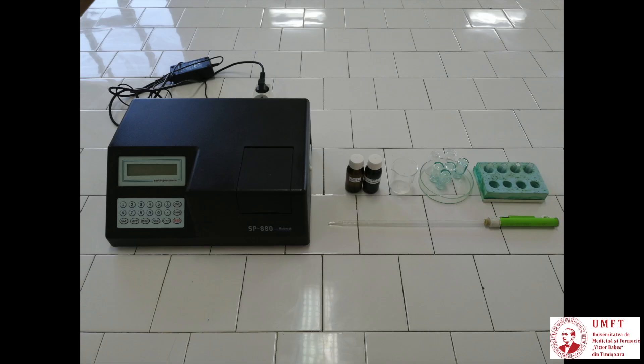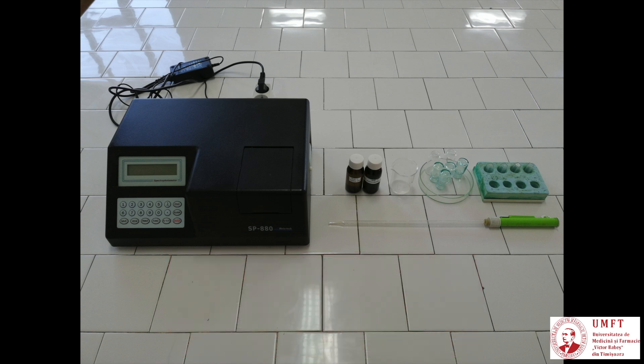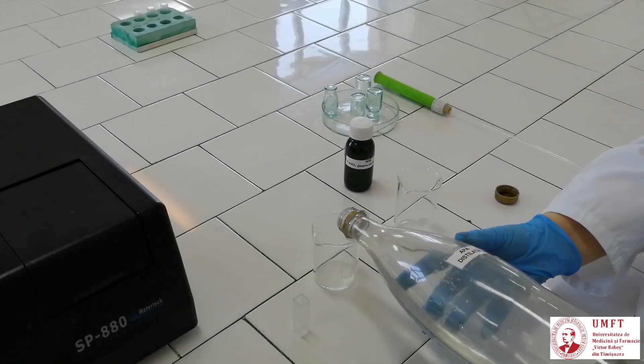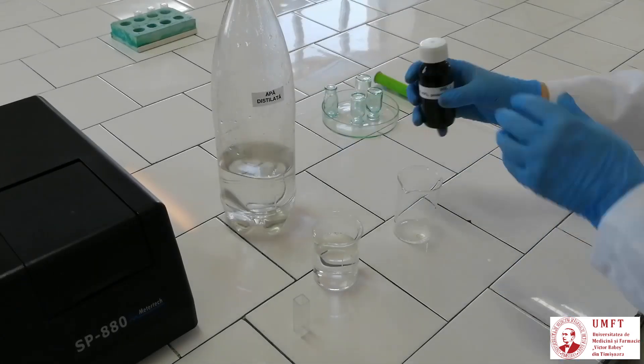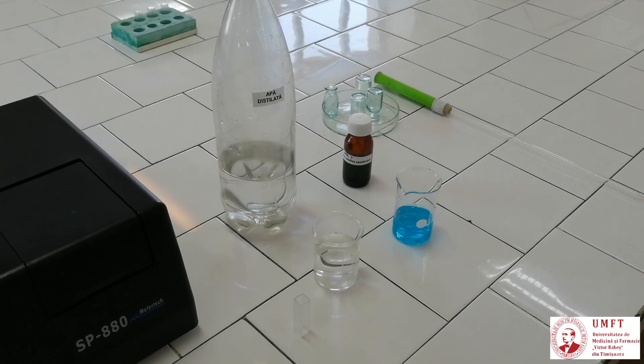In the following, using the stock solution and distilled water, prepare dilutions of copper sulfate solutions of concentration 1, 2.7, 4.2, and 5%. Pour the solution into Berzelius glass. Calculate the amounts that must be mixed using the rectangle method, as follows.